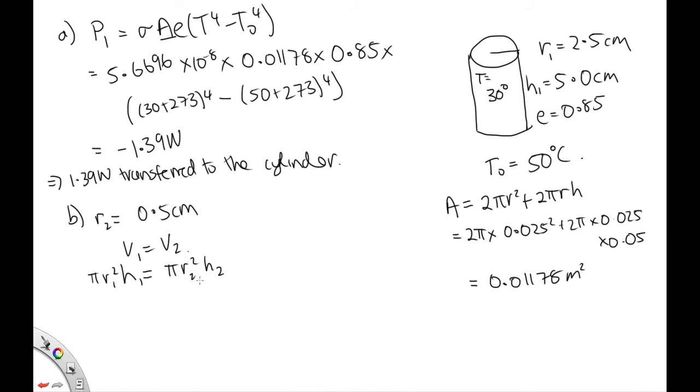So we've been told r2. What we need to work out to get the surface area of our second cylinder is the length of the cylinder. So h2 is equal to r1 squared h1 over r2 squared. So that's 2.5 squared times 5 over 0.5 squared. That gives us, when we solve it on the calculator, 125 centimeters.